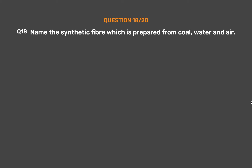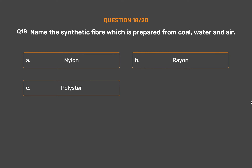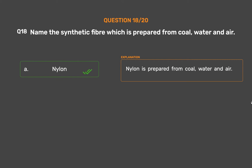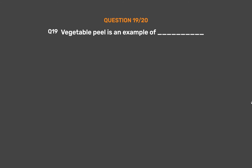Question Number 18. Name the synthetic fiber which is prepared from coal, water and air. Option A: Nylon. Option B: Rayon. Option C: Polyester. Option D: None of these. The correct answer is Option A: Nylon. Nylon is prepared from coal, water and air.